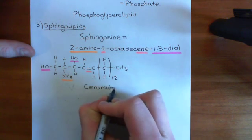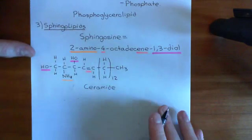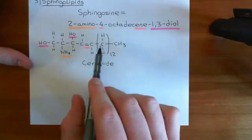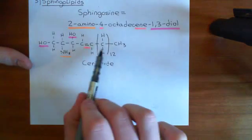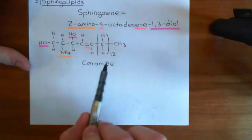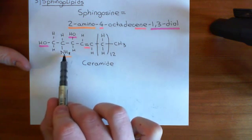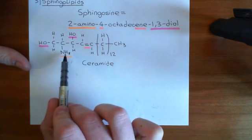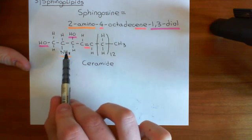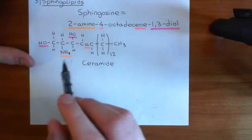Ceramide is not a single molecule — it is a whole family of molecules. Basically, the way you go from a sphingosine molecule, which is just one molecule, to a ceramide molecule, is you bind a long-chain carboxylic acid group to the amino group of the second carbon here to form an amide bond.